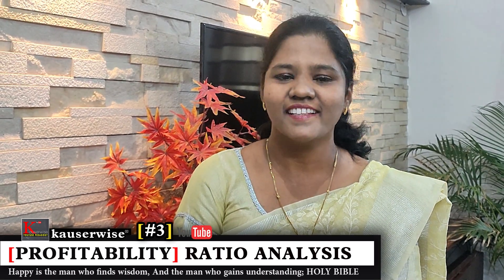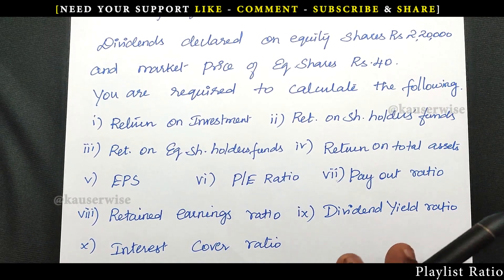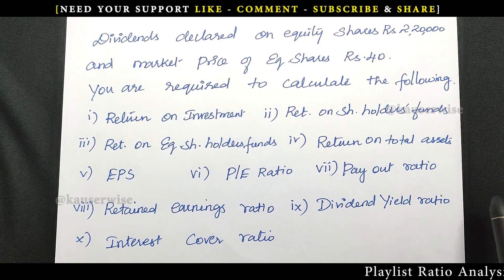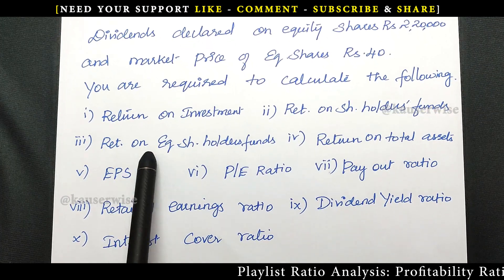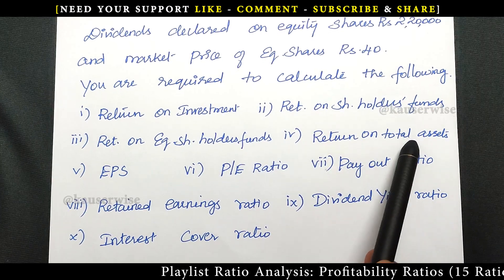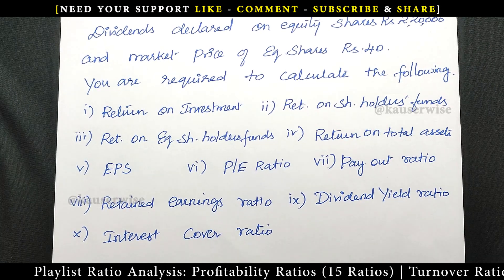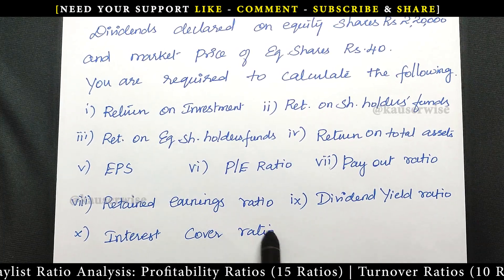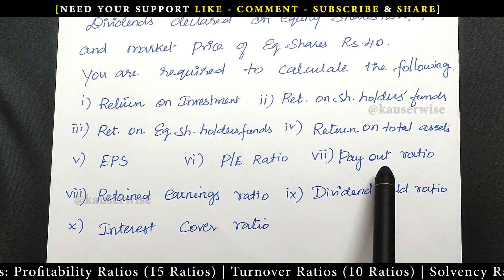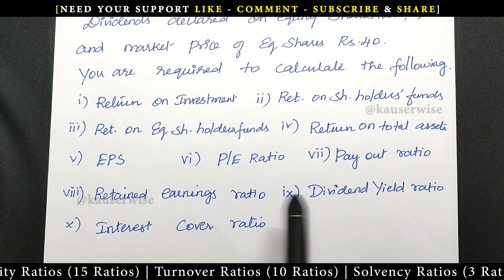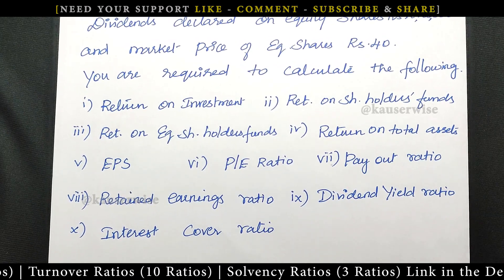Hi, welcome to my channel. This is Kouser Weiss and this is the continuation video of ratio analysis. In the previous video we calculated return on investment, return on shareholders funds, return on equity shareholders fund and return on total assets. The link is available in the description box. Now in this video we are going to learn the remaining profitability ratios: earning per share, price earning ratio, payout ratio, retained earnings ratio, dividend yield ratio and interest cover ratio. Now let's get into the video.